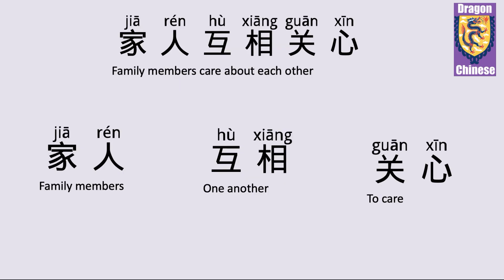家人互相关心 — family members care about each other. 家人 means family members. 家人互相关心.